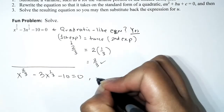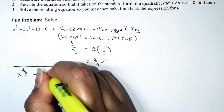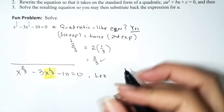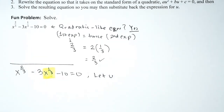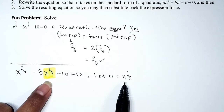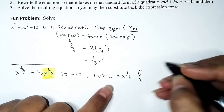We're going to solve by substitution. Let any variable of your choice represent the variable part of the middle term. We're going to let u represent x raised to the one-third — you can pick any variable, but I recommend u because you don't see it as often in equations, helping avoid confusion.